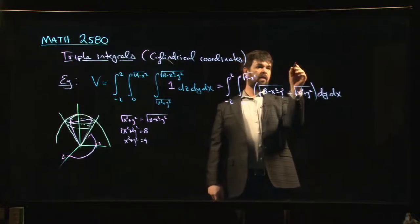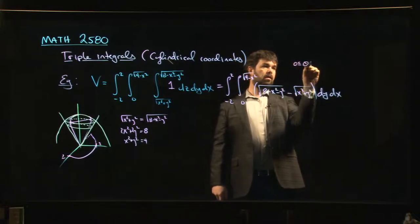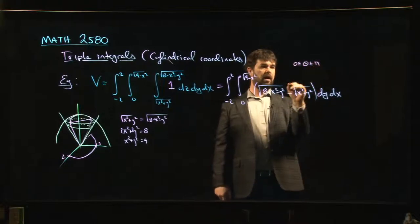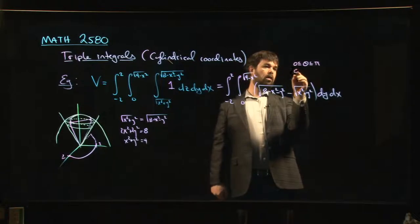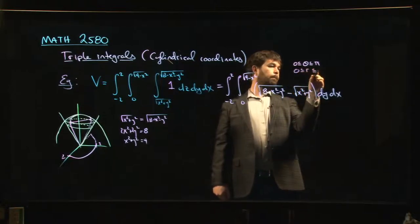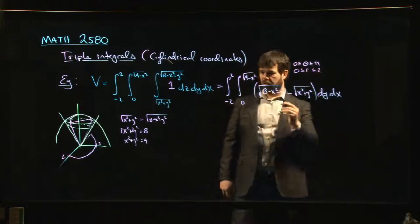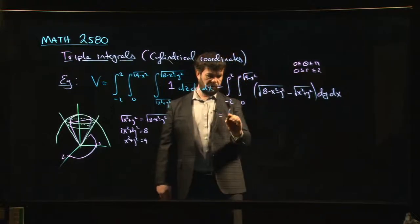We're in the, you know, y is positive, first and second quadrants. We're going to say, oh well, these limits here are telling me that theta is running from zero to pi, and that r, well, we're staying inside a circle of radius two, r is running from zero to two.